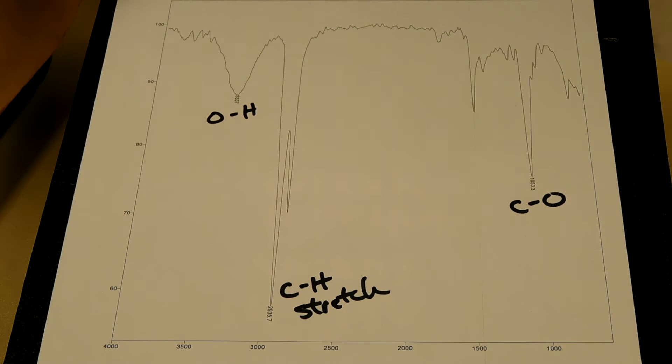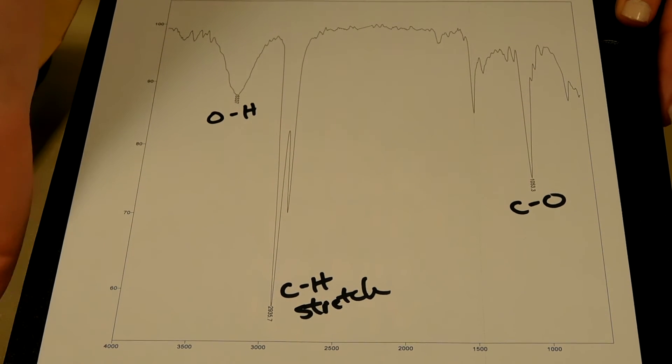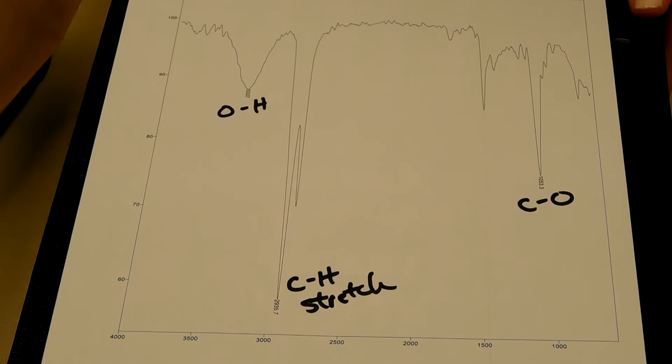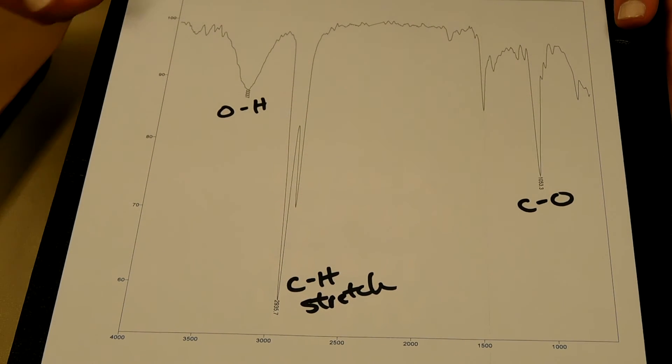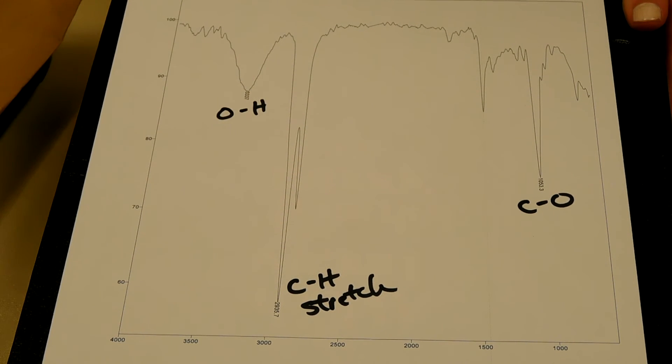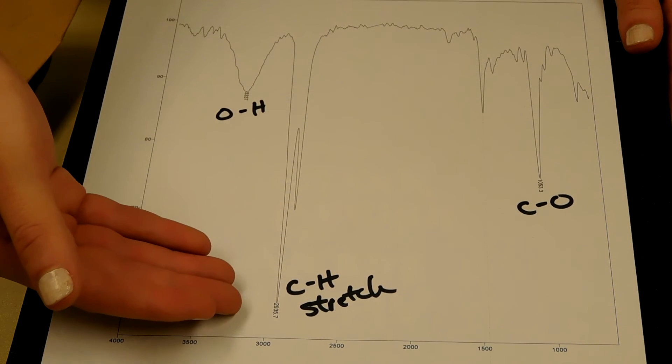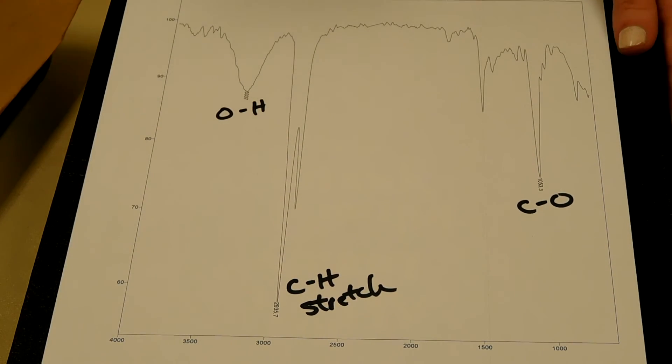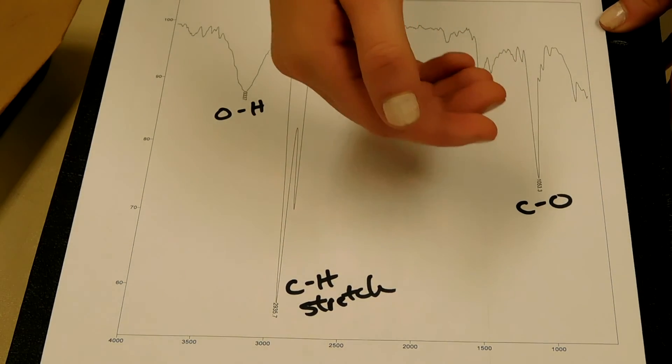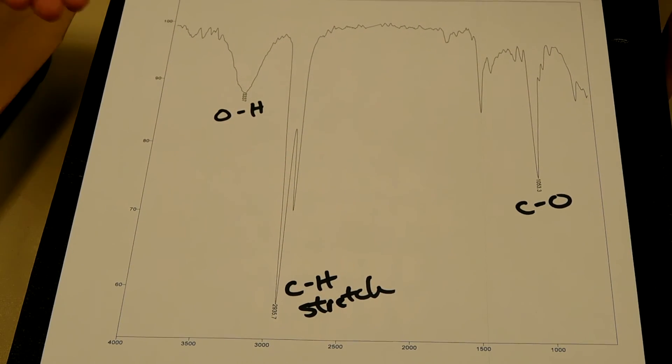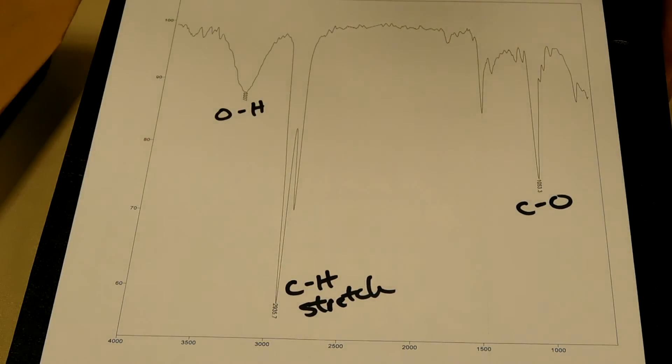At the end of the experiment, you should end up with a piece of paper with a date on it that looks like this. The IR is measuring the bending and the stretching of the bonds in the chemical you're testing. In this case, we have the O-H bond, which is right here, happening at 3,337 reciprocal centimeters. Then we have the C-H stretch, happening at 2,935.7 reciprocal centimeters, and finally the C-O, which is at 1,053.3 reciprocal centimeters. This just shows you the bonds that are going on in the sample.